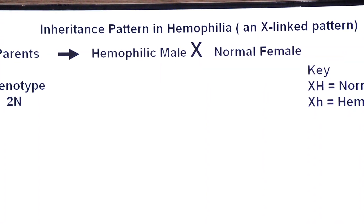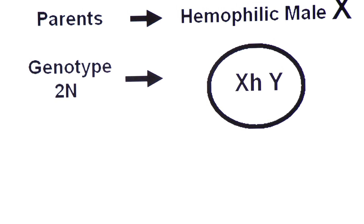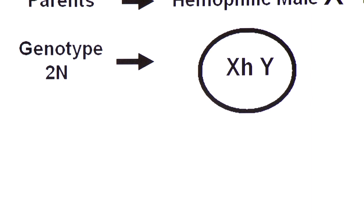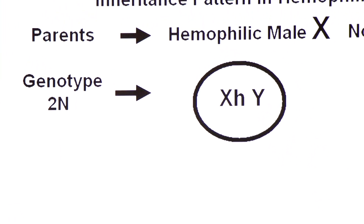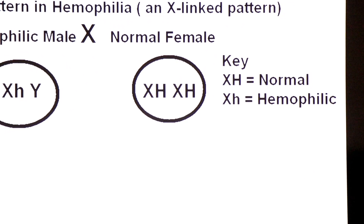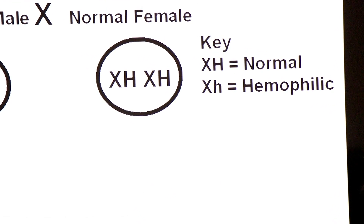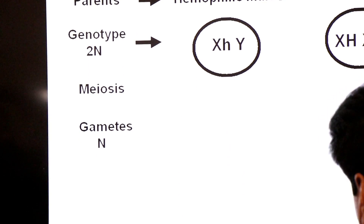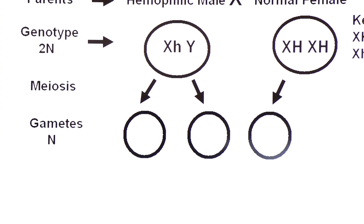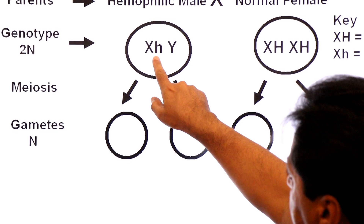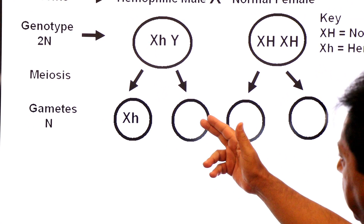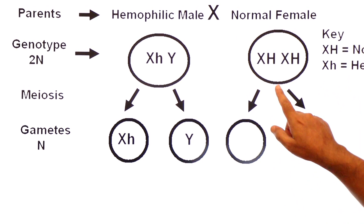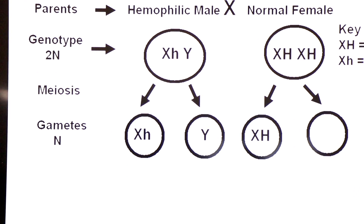Genotypes: the hemophilic male has X small h Y — only one small h on his X-chromosome makes him hemophilic. Note that Y carries no allele for hemophilia. The normal female is X capital H X capital H. Now we draw gametes for both parents via meiosis, which reduces diploid number to haploid. From the male: X small h goes to one sperm and Y goes to another. From the female: X capital H goes to one egg and X capital H goes to another egg.